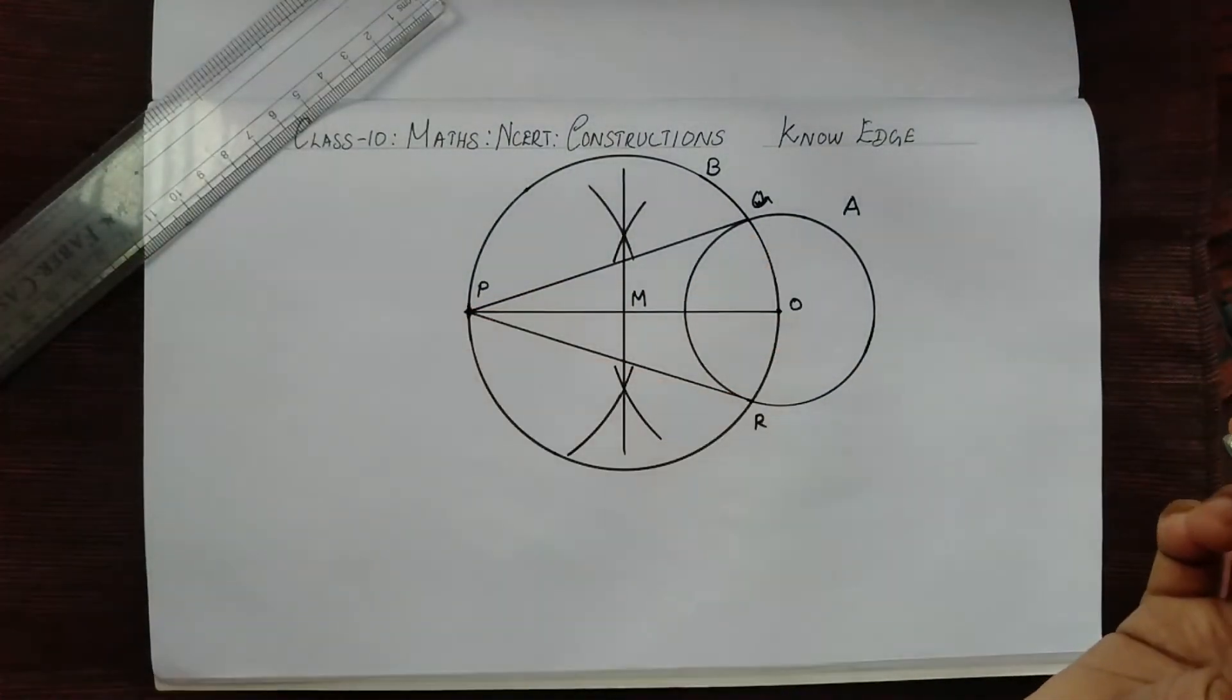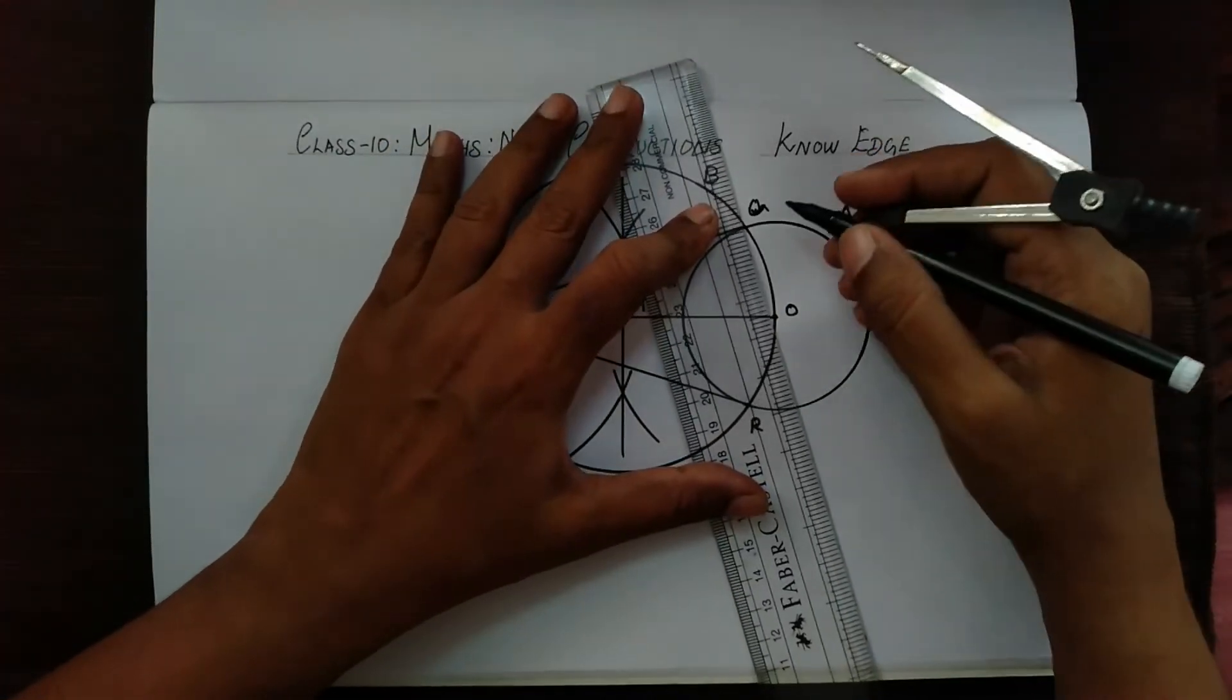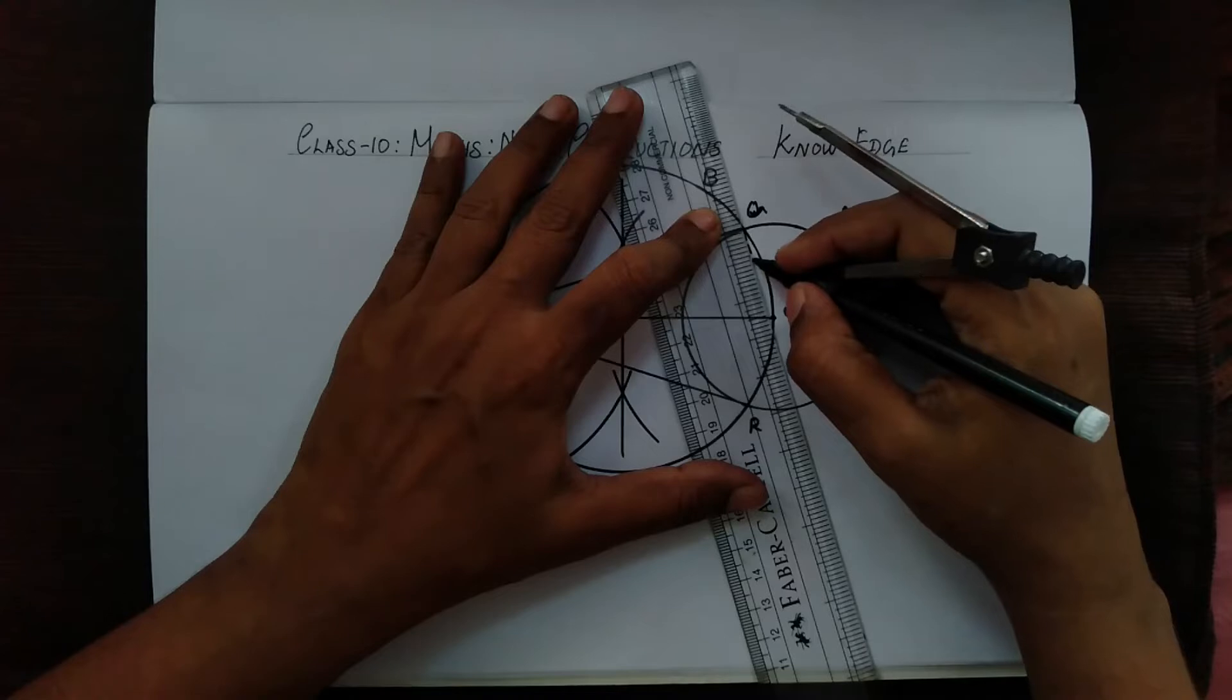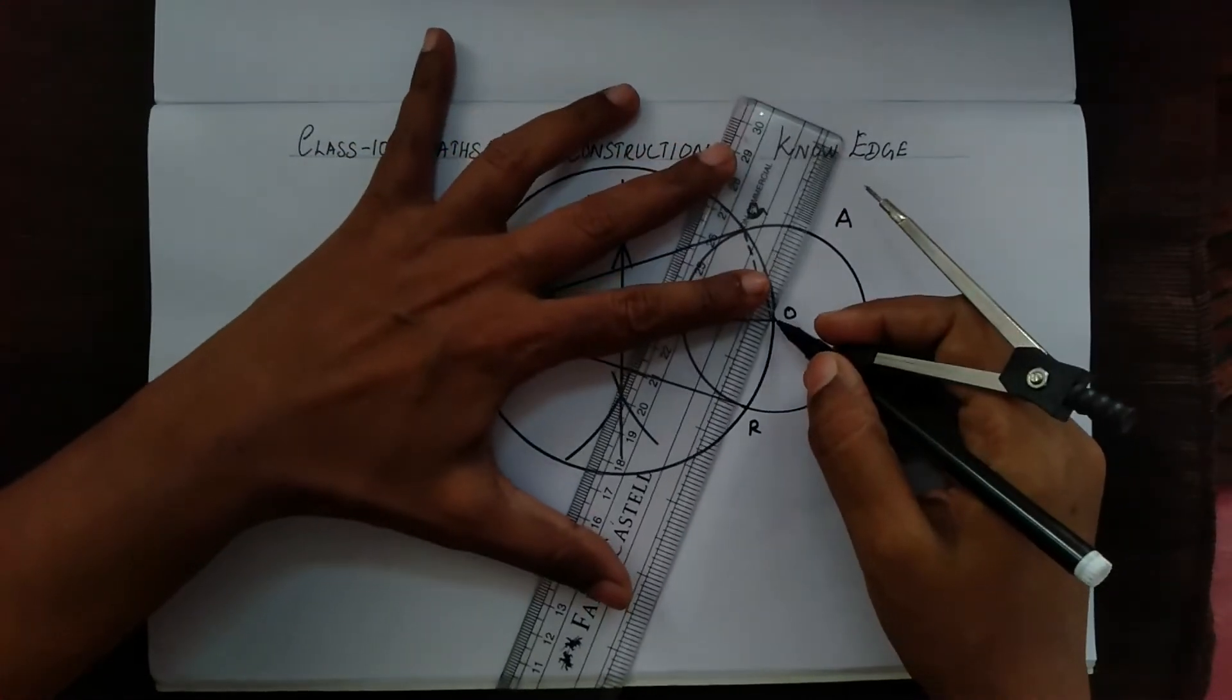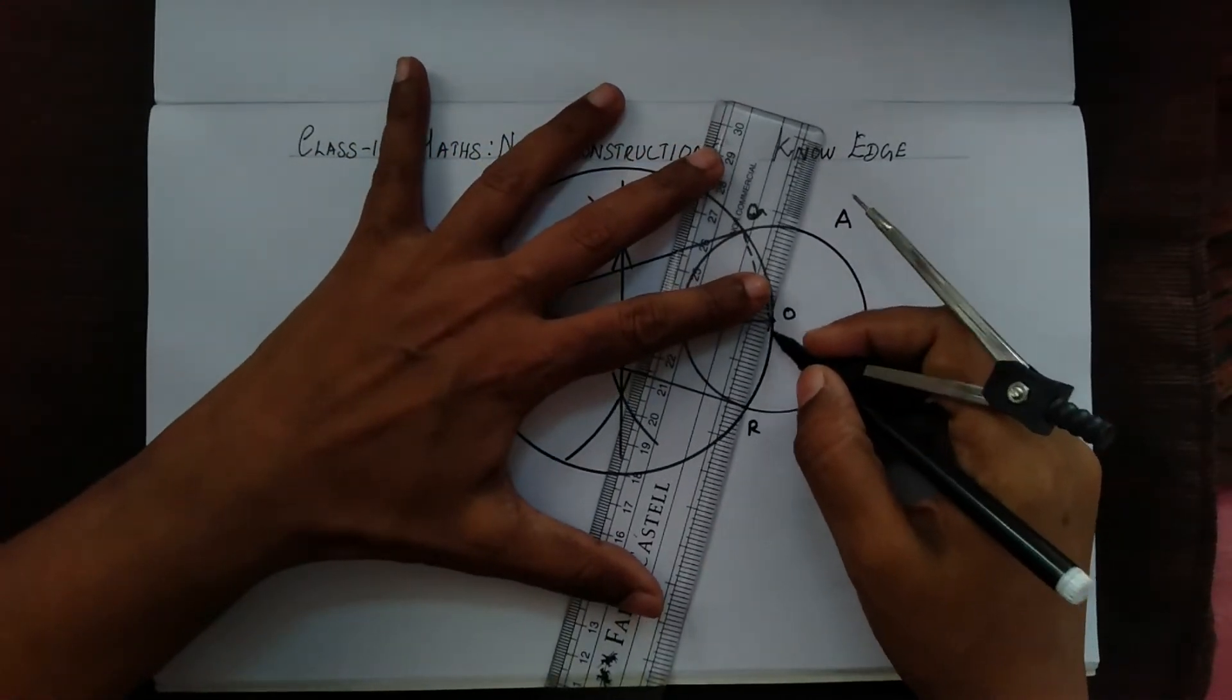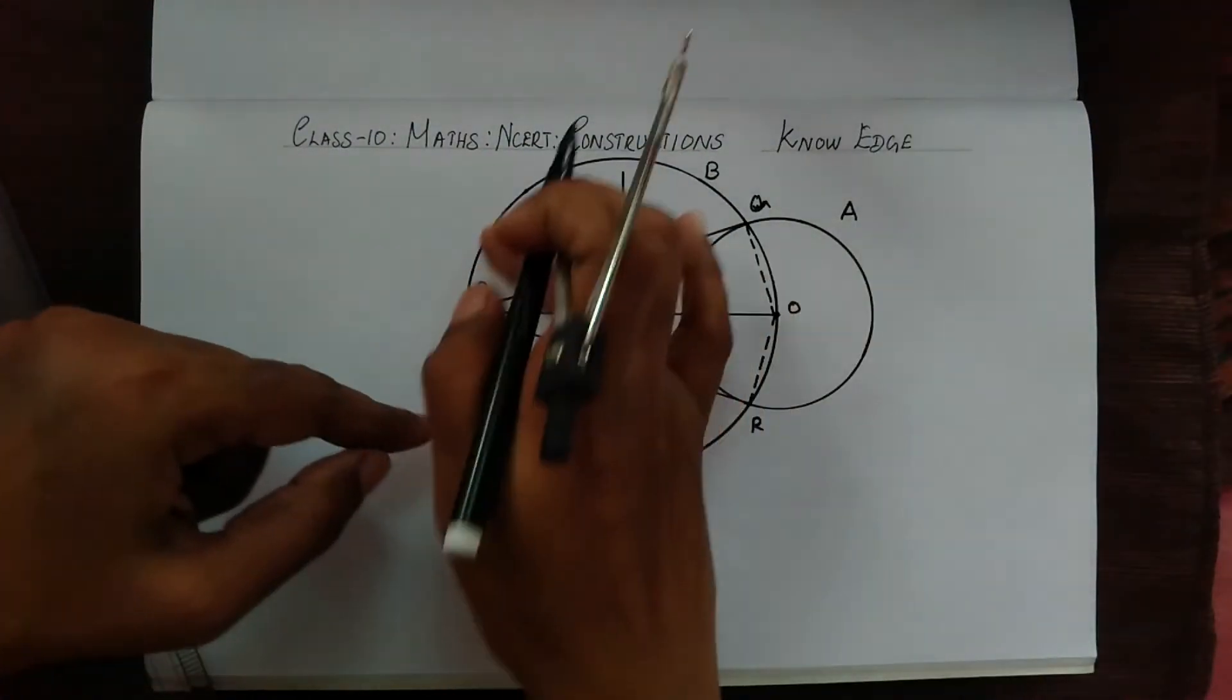But how are we going to prove it? For that we can join OQ using dotted lines and same way we can join OR using dotted lines.